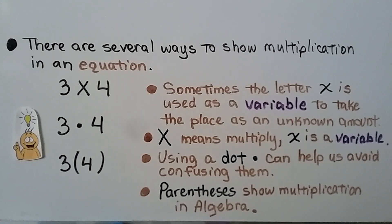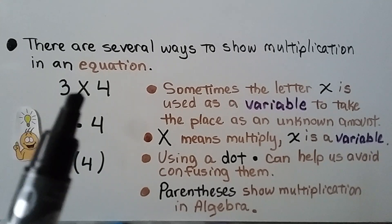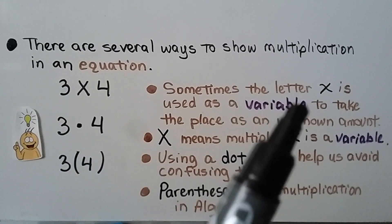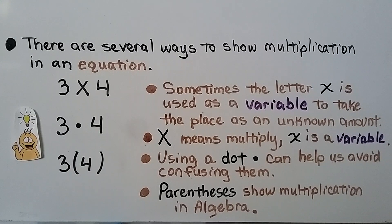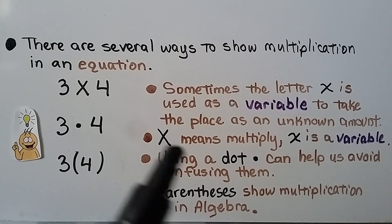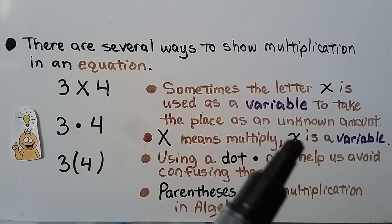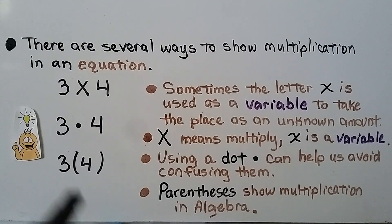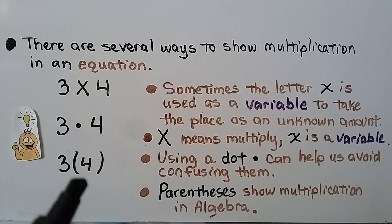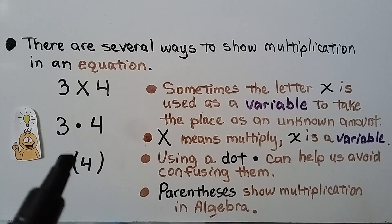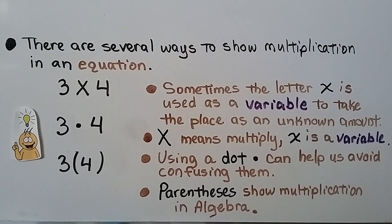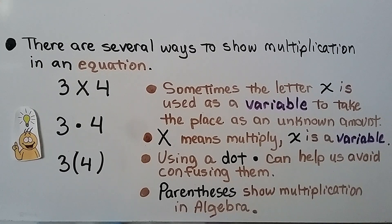There are several ways to show multiplication in an equation. We've been using the big X for 3 times 4. Sometimes the letter x is used as a variable to take the place of an unknown amount — so the big X means multiply, while a slanted x is a variable. Using a dot between two numbers can also show multiplication and helps avoid confusion. Parentheses also show multiplication — in algebra, the number will be right up next to the parentheses with no operation sign, meaning we're multiplying. Variables are usually written in italics, almost looking a little script or slanted.